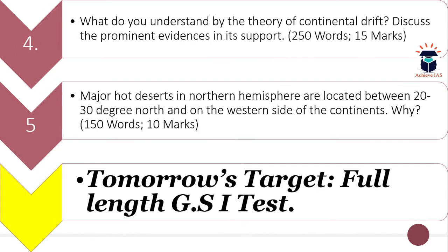Now moving to the static part — the fourth question is: 'What do you understand by the theory of continental drift? Discuss the prominent evidences in its support.' Word limit is 250 and maximum marks are 15.